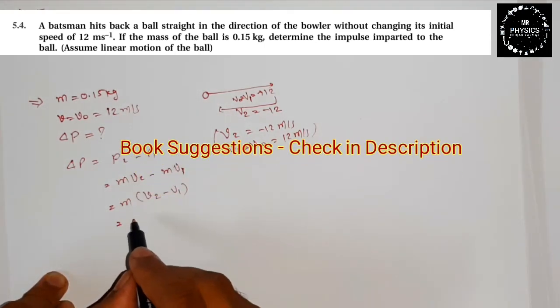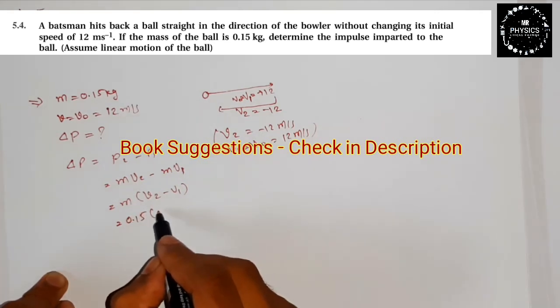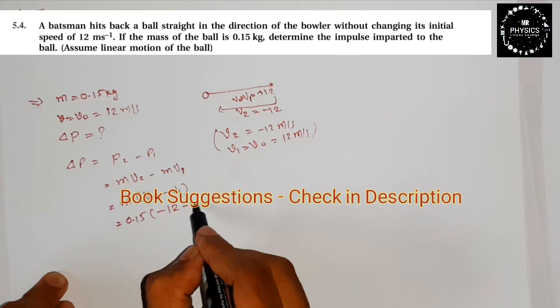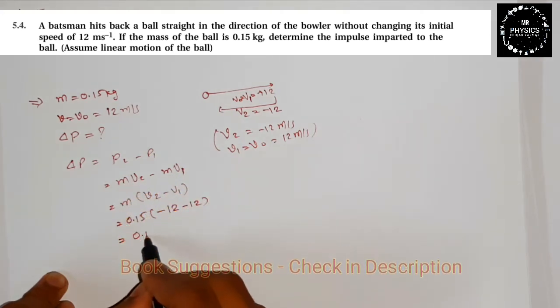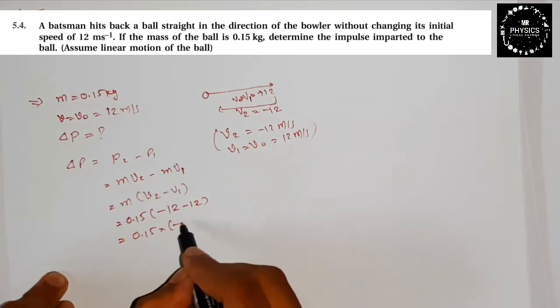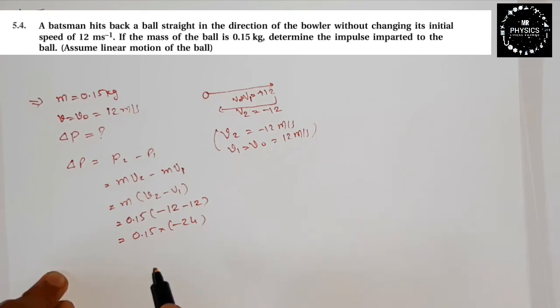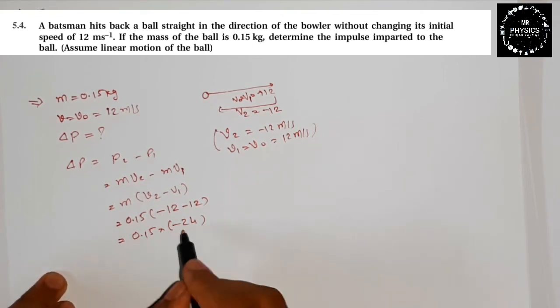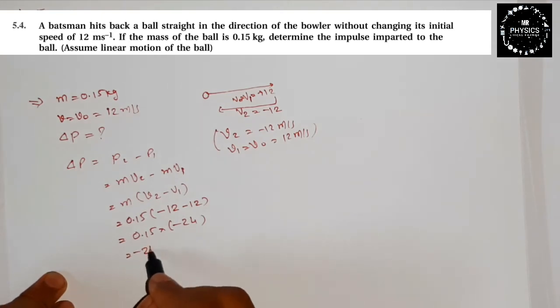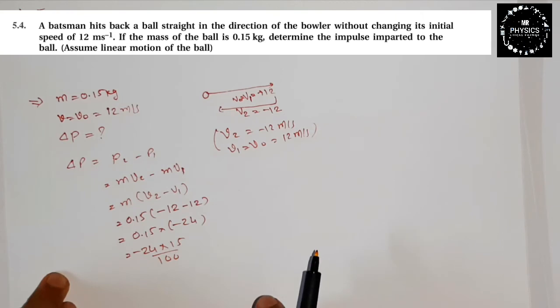We'll use these values. The mass is 0.15 into minus 12 minus 12, so 0.15 into minus 24. Minus 24 divided by 15, which is minus 24 times 15 divided by 100. You can do the calculation in your own way.